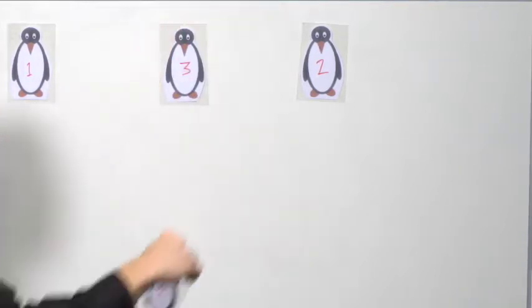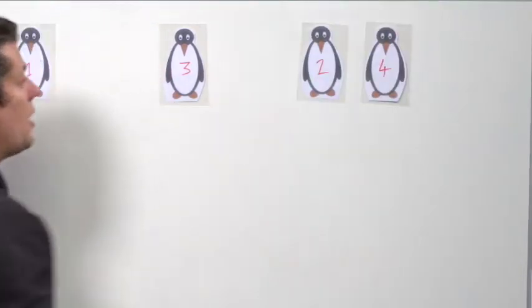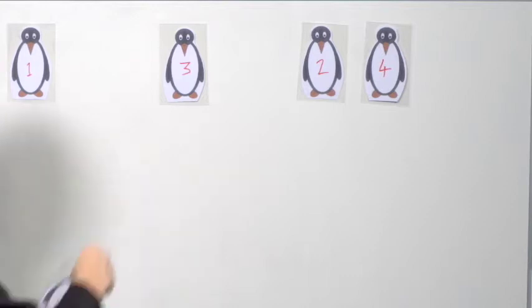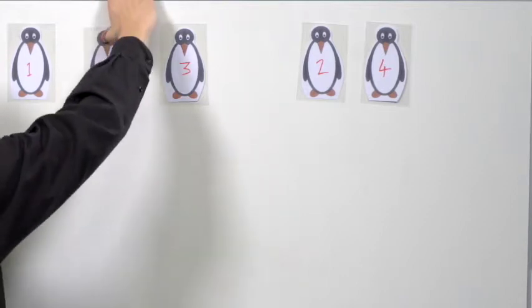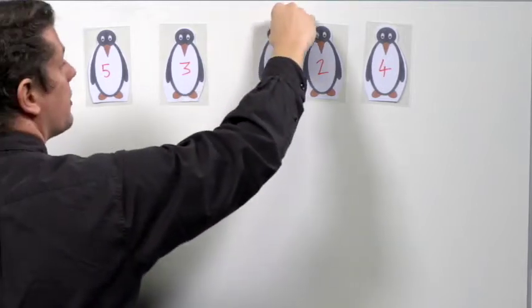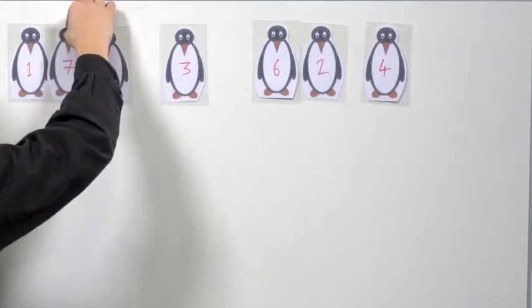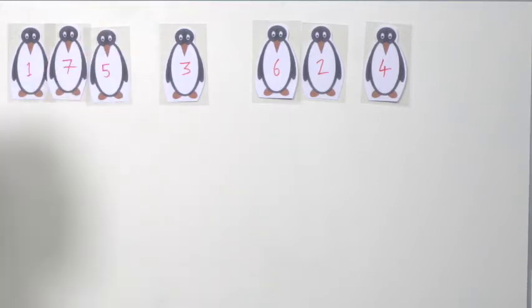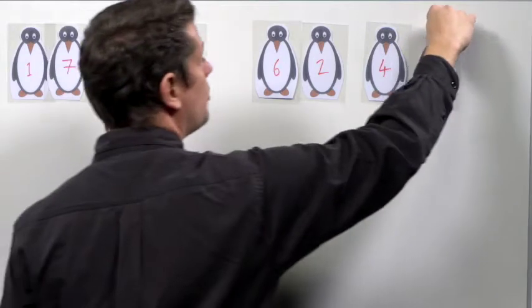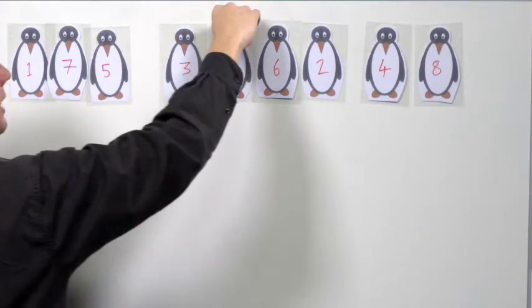Penguin 4 comes along, joins the queue immediately behind penguin 2. Penguin 5 joins the queue straight behind penguin 1. Penguin 6 then joins behind penguin 3. Penguin 7 behind penguin 1. Penguin 8 behind penguin 4. And then penguin 9 behind penguin 3.